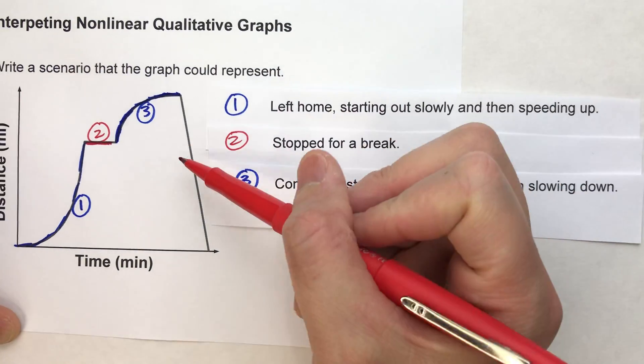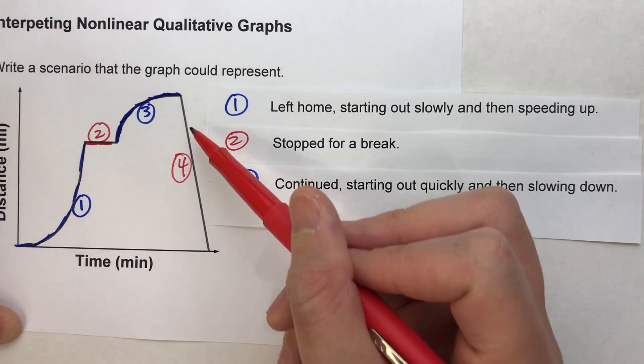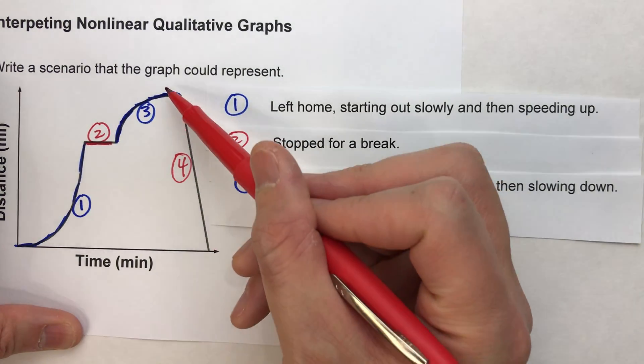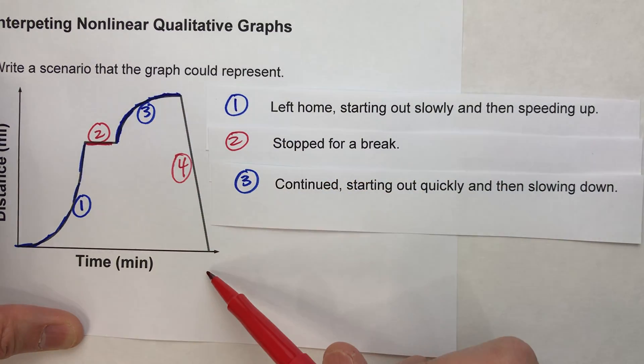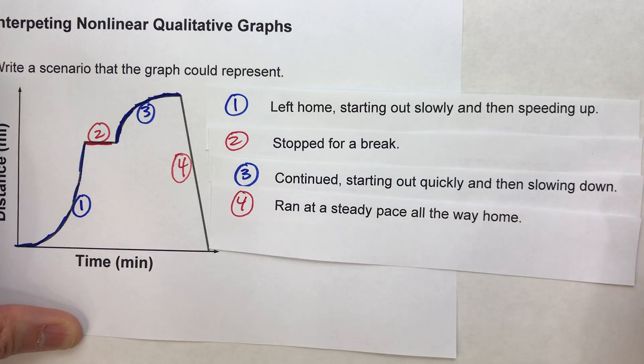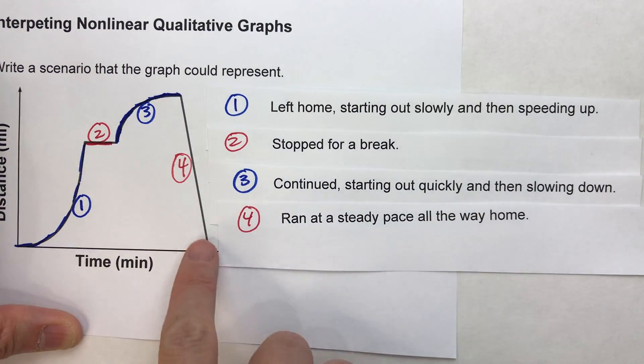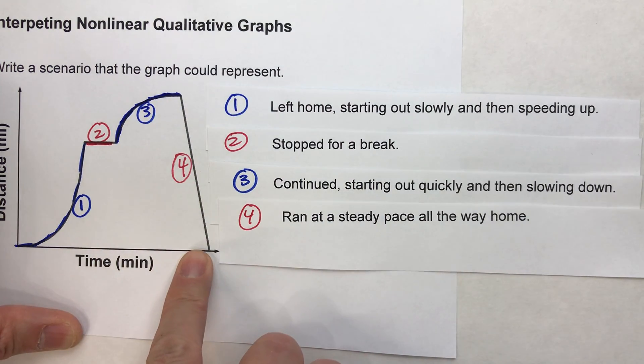That leads us to the last section right here. Now, this is a decreasing interval. And notice this one's a straight line. So this one is decreasing at a constant rate. So they're not speeding up or slowing down. We're decreasing at a steady pace. So in this case, because we're going back to zero, we could say we ran home at a steady pace.